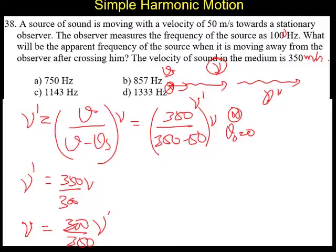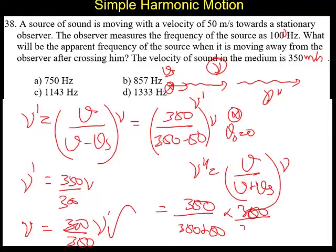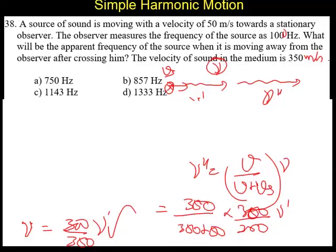Now in the second case when the source is receding away from the observer, ν double dash equals V by V plus Vs into ν. So V is 350 by 350 plus 50 into what is ν? We have already calculated it is 300 by 350 into ν dash.